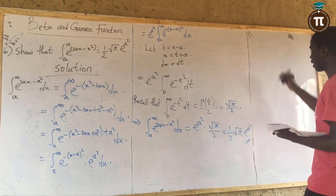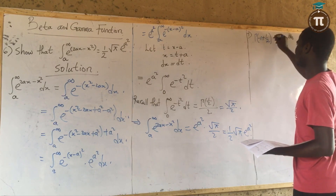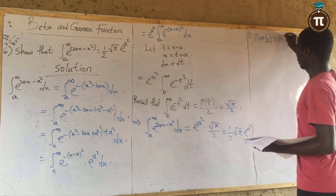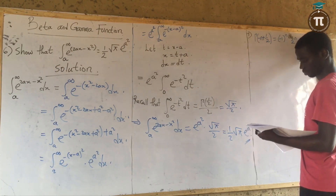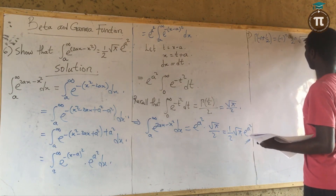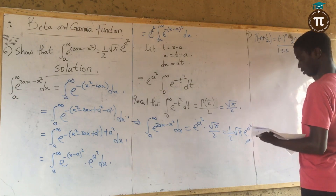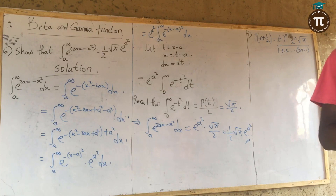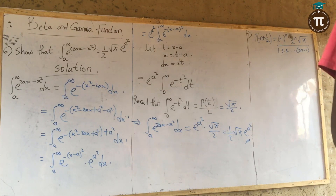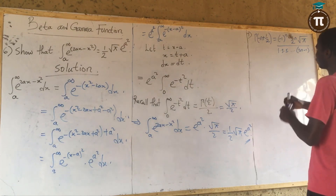Number 7: we want to prove that gamma of (minus n plus one half) equals minus one raised to power n, times 2 raised to power n, times root pi, all over 1 times 3 times 5 up to (2n minus 1). That is what we need to show.